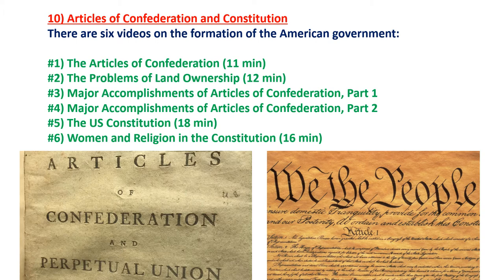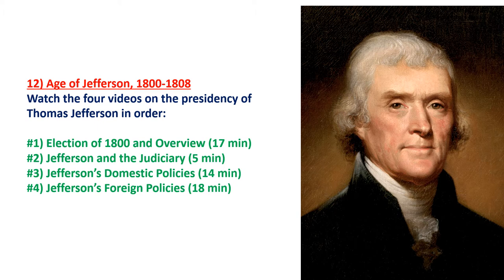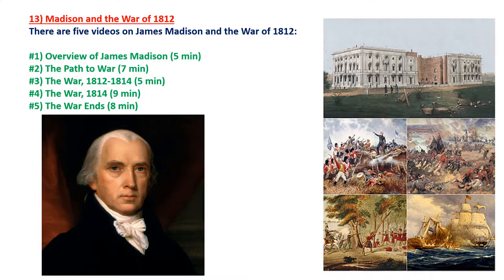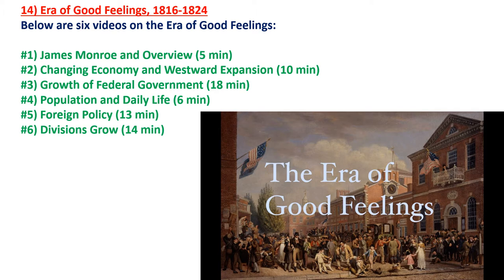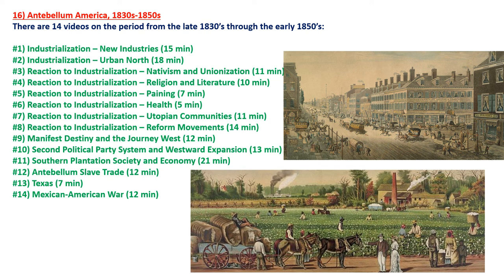There are six videos on the formation of the American government — the Articles of Confederation and the Constitution. There are six videos on the Federalist era, roughly 1788 to 1800, including the presidencies of George Washington and John Adams. There are four videos on the presidency of Thomas Jefferson and the second half of the first political party system. There are five videos on James Madison's presidency and the War of 1812. There are six videos on the Era of Good Feelings, roughly 1816 to 1824, and five videos on the presidencies of John Quincy Adams and Andrew Jackson and the beginning of the second political party system.